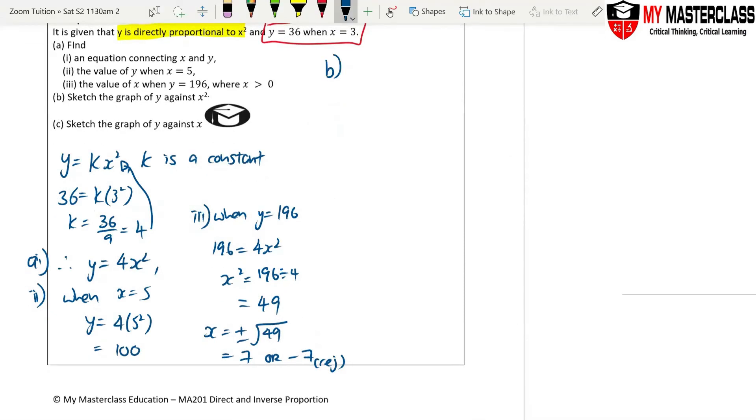Part b. This is called write down the graph of direct proportion. The graph of direct proportion is always a straight line.